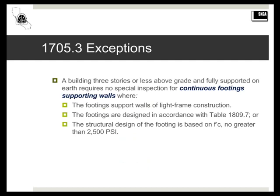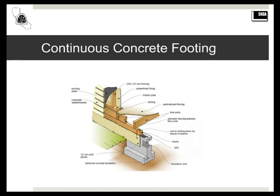The second exception: if we have the same structure as previously — a building three stories or less above grade, fully supported on earth and rock — where the footings support walls of light frame construction, and the footings are designed in accordance with Table 1809.7, or the structural design of the footing is based on f'c no greater than 2500 PSI, then no special inspection is required.